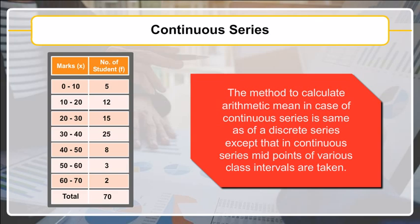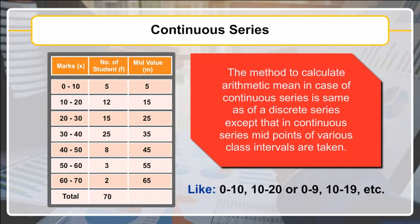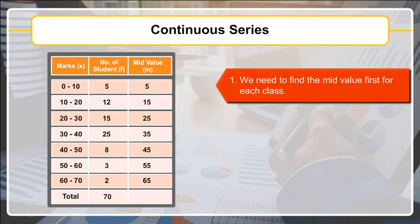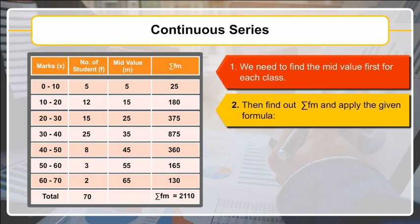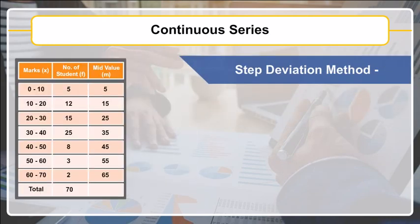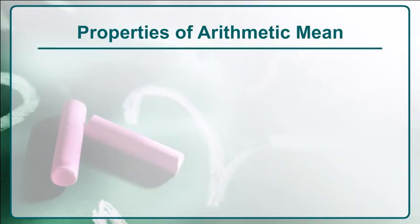For continuous series, the method to calculate arithmetic mean is the same as for discrete series, except that midpoints of various class intervals are used, such as 0–10, 10–20, or 0–9, 10–19, etc. In the direct method, find the mid-value m for each class, then apply: x-bar = summation(fm) / summation(f). In the step deviation method: d-dash = (m − a)/c, and x-bar = (summation(fd-dash) / summation(f)) × c.